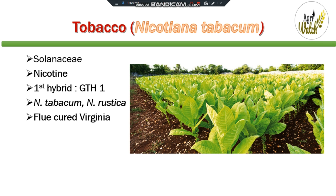Indian tobacco is grouped into flue-cured Virginia type and non-Virginia type. Flue-cured Virginia is used for cigarette tobacco and is the major exportable type. Non-Virginia type is used for bidi, hookah and chewing tobacco, accounting for 70% of area and 80% of production of the total tobacco.